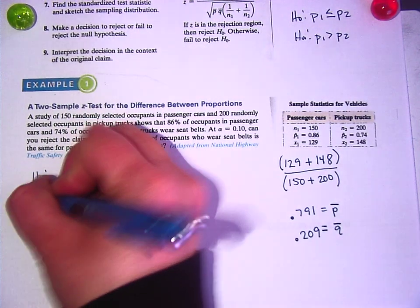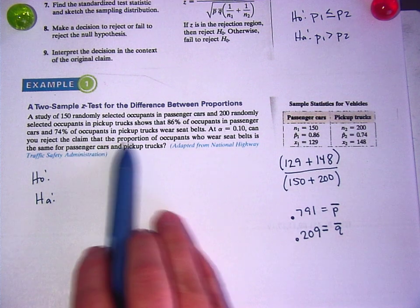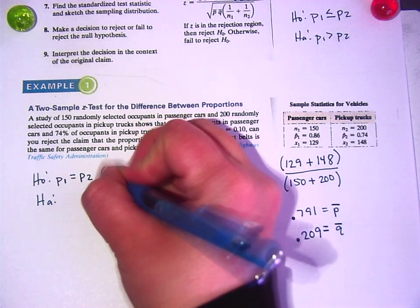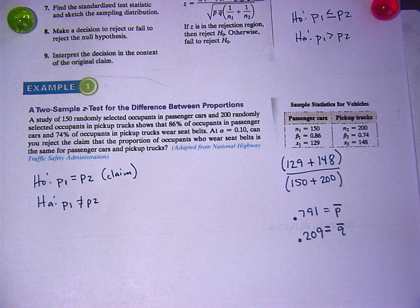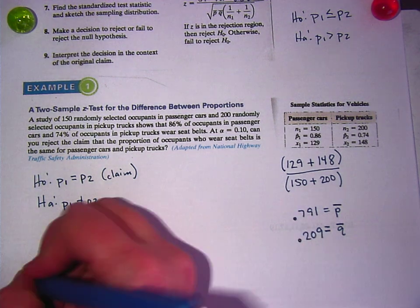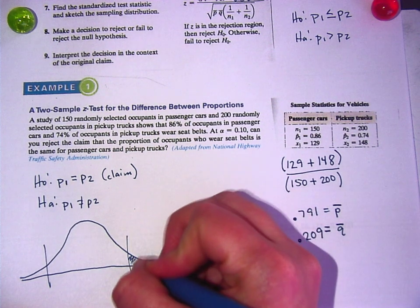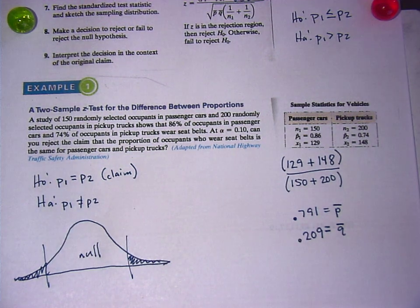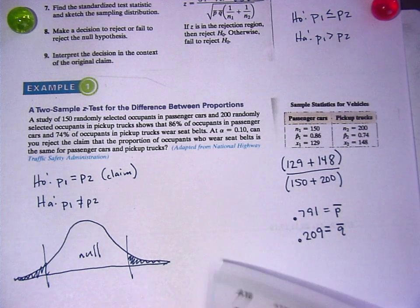All right, H sub 0, H sub A. What's their claim? Can you reject the claim that the proportion of occupants wear the seatbelts is the same? Yeah, equal. So, P sub 1 is equal to P sub 2. Is that the claim? And the opposite of that is P sub 1 is not equal to P sub 2. I'm going to draw a bell curve. Left-tailed, right-tailed, two-tailed. All right, we're using a Z-table on this one. It's 10%.